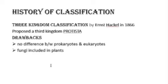After that, a three kingdom classification system was introduced by Ernst Haeckel in 1866. This system added a third category called Protista, in which unicellular organisms were given a proper place.